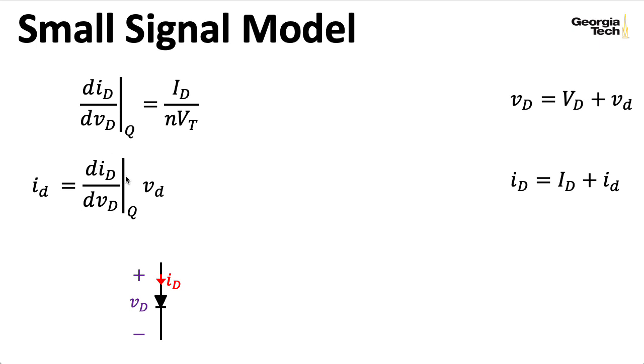This is really only going to be relatively valid within a small region around that operating point. This current equals a constant times a voltage is in the form of an expression of Ohm's law, where this derivative here is a conductance. So let me define this as Gd. So we'll say the small signal current is equal to the small signal voltage times the small signal conductance. Now remember, the small signal conductance is a function of the current.